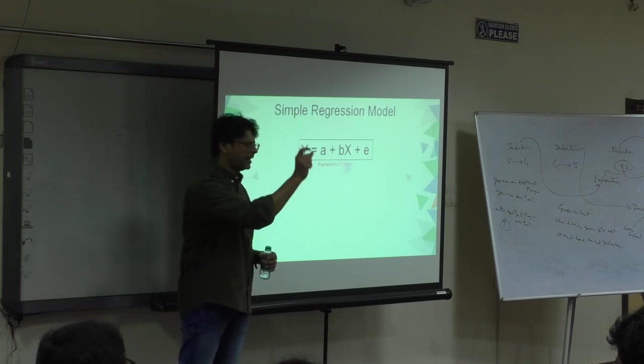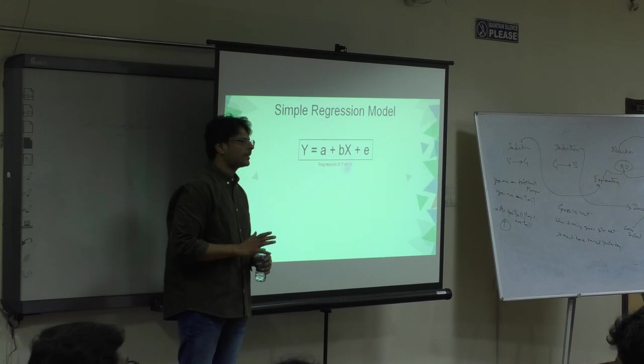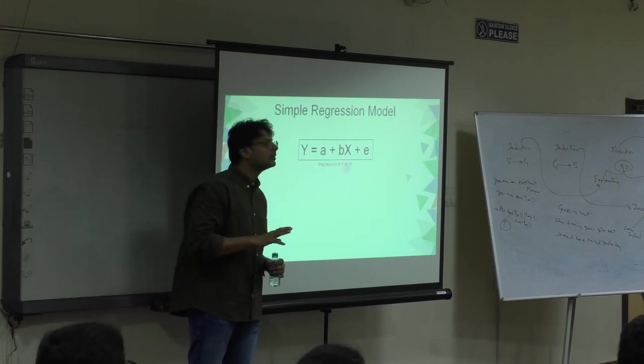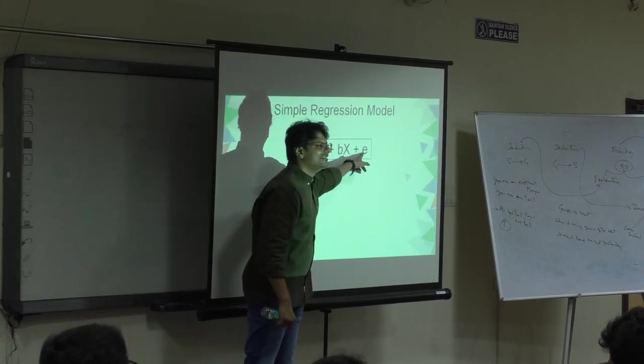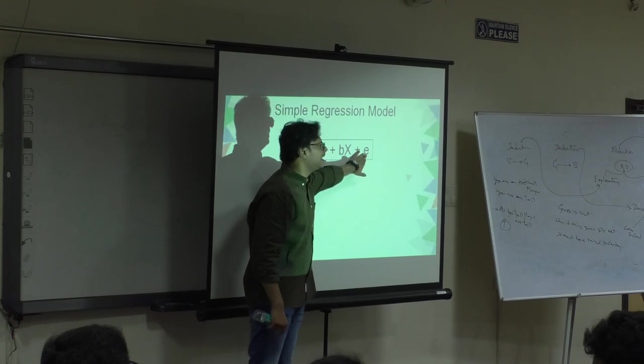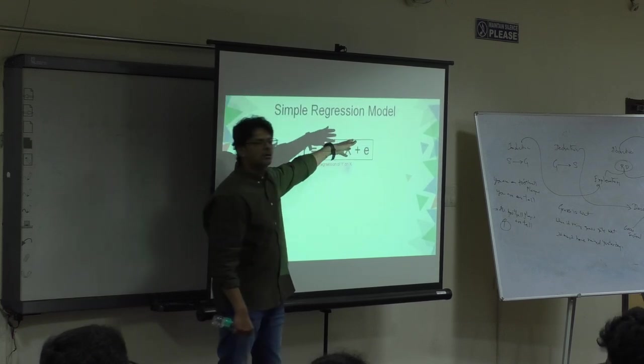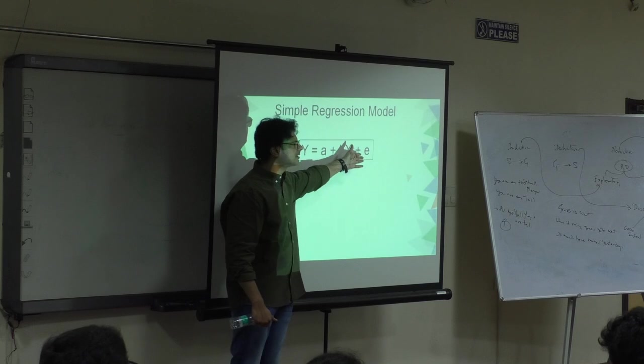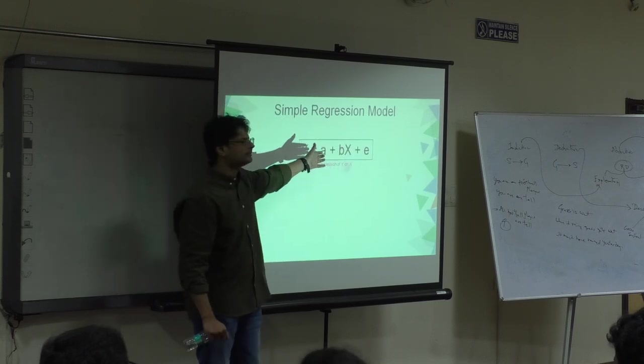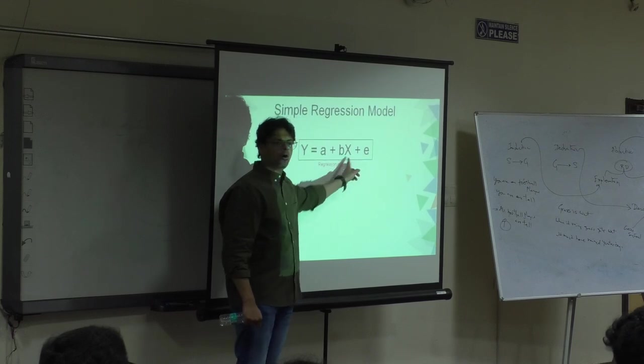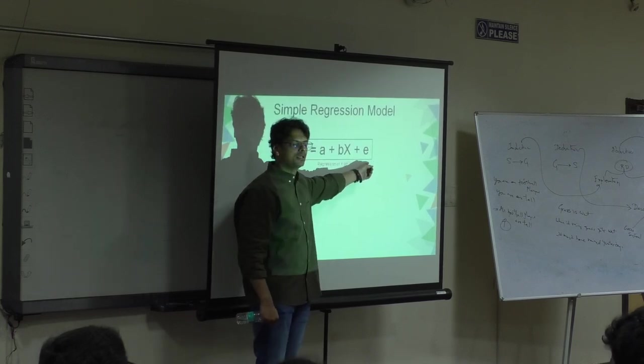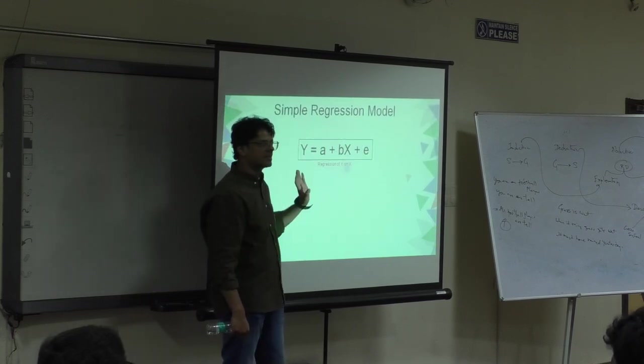You get an absolute number which has units. It is not exact because this epsilon is just written E. That is called the error term. Here we are finding out error term on the total equation level, not individual observation level.